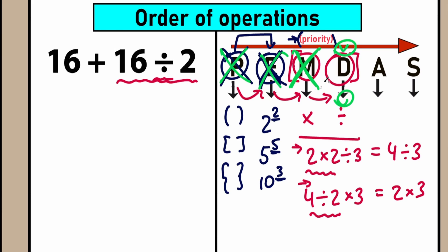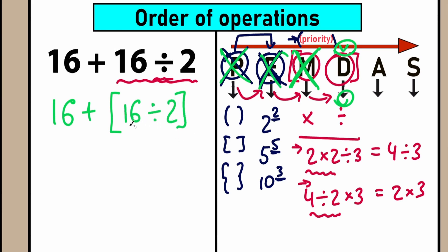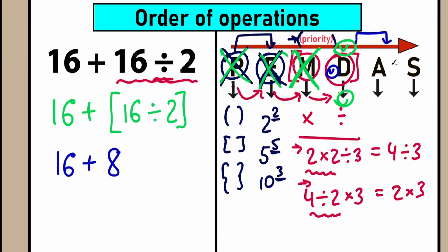We need to evaluate this expression in strict order from left to right, and division comes first. So we have 16 plus — and I'll underline the division part — we put imaginary brackets around 16 divided by 2. So 16 divided by 2 equals 8. We complete this division part easily: 16 plus 16 divided by 2 equals 16 plus 8.